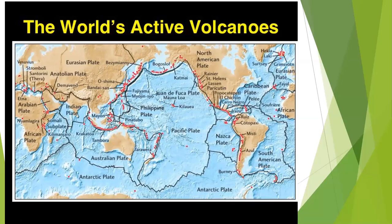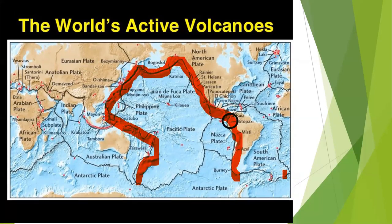All of these red dots that you see are volcanoes formed that way — well, almost all of them anyway. Cotopaxi certainly is, here it is on the edge of South America. In fact, there are so many volcanoes formed from subduction around the Pacific plate, we call that the ring of fire.